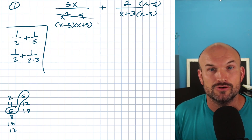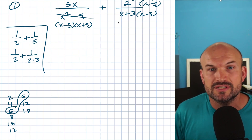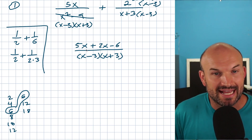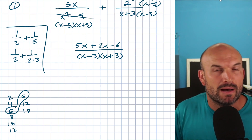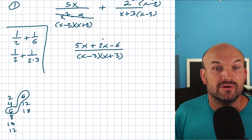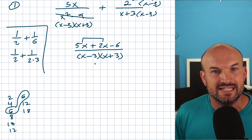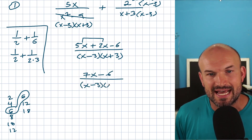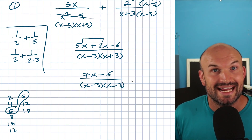All we need to do is combine our numerators. I'll apply the distributive property to get two X minus six. Everything is over our common denominator, which I'll leave in factored form — you could multiply back out to X squared minus nine, but we never know if something might simplify. So I can now add five X and two X to get seven X minus six, all over X minus three times X plus three, and nothing can be simplified further. That's my simplified answer.